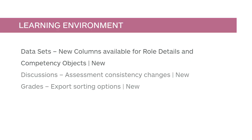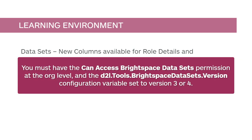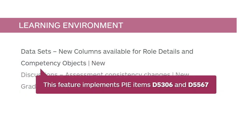This release includes new columns for existing Brightspace datasets. The Role Code column has been added to the Role Details dataset, and the Is Hidden column has been added to the Competency Objects dataset. You must have the Can Access Brightspace Datasets permission at the org level, and the D2L Tools Brightspace Datasets Version configuration variable set to Version 3 or 4. This feature implements PI Items D5306 and D5567.